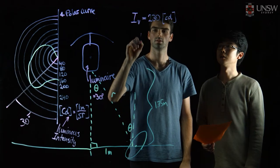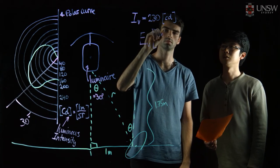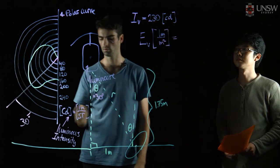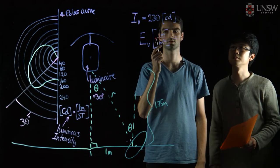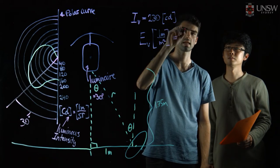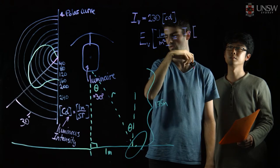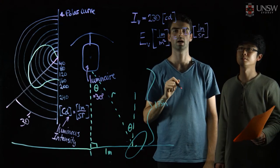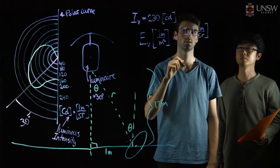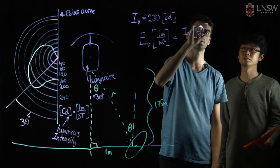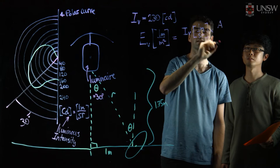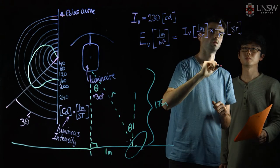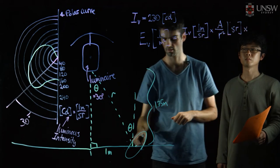So what we're looking for is illuminance, which has units of lumens per metre squared. We have our luminous intensity, and in order to get from luminous intensity to illuminance, we need to have our luminance in units of lumens per steradian. Then we need to multiply out by the solid angle subtended for this particular situation — that would be our area in steradians — and then divide by the particular area of interest.